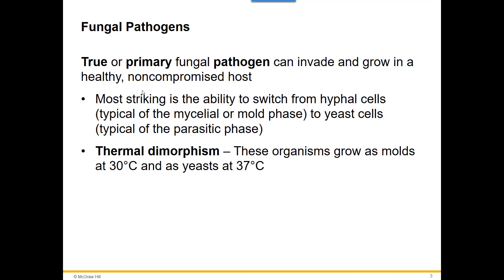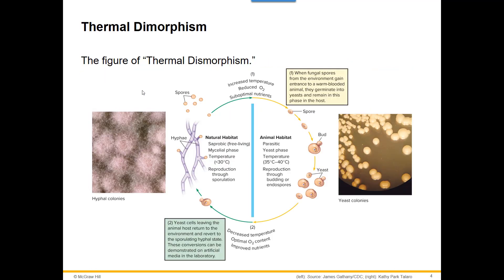They grow as molds at 30 degrees Celsius. When they get up to 37 degrees Celsius body temperature, they grow as yeast, the more parasitic form. So in their natural habitat they're growing more as spores, but when we breathe in those spores and they reach 37 degrees, they grow as yeast in the body and begin budding and spreading inside. This is called thermal dimorphism — the ability to go back and forth based on temperature.